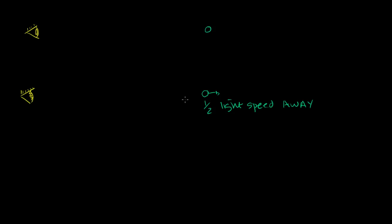Now let's imagine what would happen. They're both emitting light, so they're both going to start emitting light at the exact same time. And when they start emitting light, they're both at the exact same distance from my eye. The only difference is that one is stationary relative to me, while the other is moving away from me at half the speed of light.